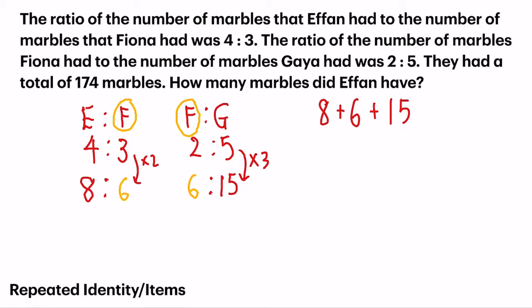Now, the answer 8 plus 6 plus 15, I get 29. And I can finally link this number that's given, 174, to these 29 units. Now the question: how many marbles did Yvonne have? To do so, I can just straight away find 1 unit, which is 174 divided by 29. I will get 6.